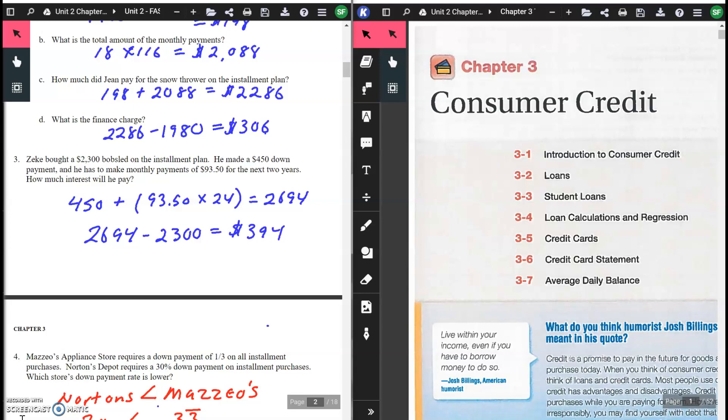$2,694 is what he paid, but it actually sold for $2,300. You subtract the two, and the difference of $394 is how much interest he paid to borrow that money. $2,300 plus $394 in interest was his total price.